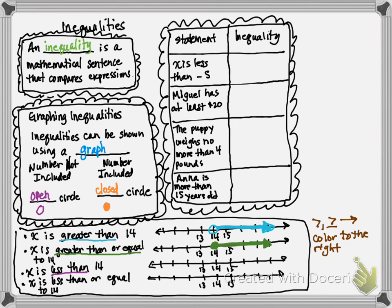Now let's look at less than. It says x is less than 14 — it does not include 14 as the answer, so that's an open circle, and the numbers that are less are to the left. Don't forget that arrow cap. And if I try less than or equal to 14, that means 14 is one of the solutions, so I darken it in and color to the left. So less than or less than or equal to means we're going to color to the left — which makes sense. Left is less, right the numbers are getting greater.